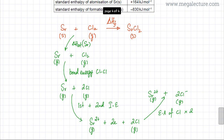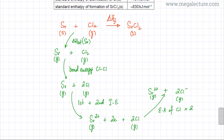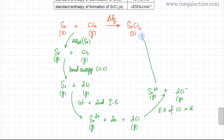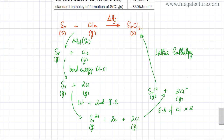The last step is the lattice enthalpy. The gaseous ions come together, form ionic bonds, and create an ionic lattice, producing SrCl₂ solid. This is the lattice enthalpy of SrCl₂ — when one mole of ionic solid is formed from its constituent gaseous ions. Now we fill in the values from the question or the data booklet.